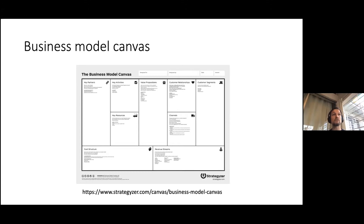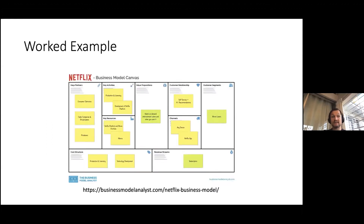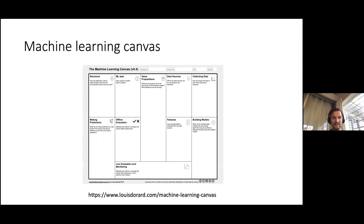It's a useful tool. Some of the accelerators I've worked in have been in the engineering space — large engineering firms trying to see if they can spin out a business unit into its own startup. There are electronic versions you can drag things onto, but you can also do it in a simple PDF with annotations. A colleague of mine at UCL, Louis Dorard, has put together the Machine Learning Canvas — a domain-specific type for problem domains.